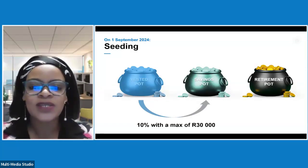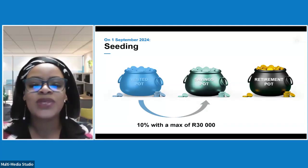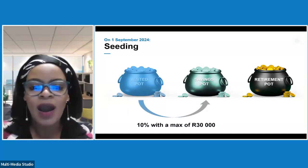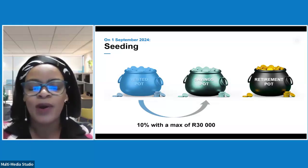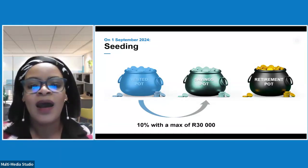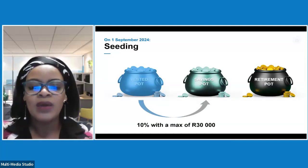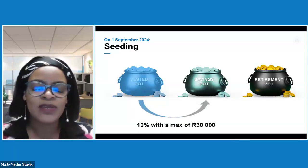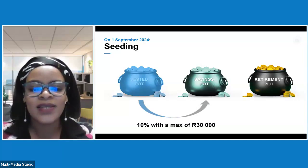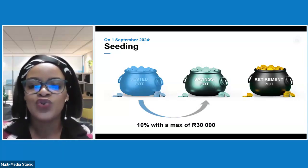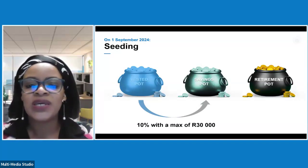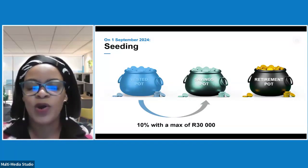The seeding process took effect within the Sanlam Easy Retirement Plan on 2 September, as that was the first working day of September. This 10% seeded amount is accessible to members to withdraw as an emergency savings withdrawal.